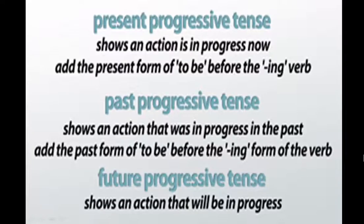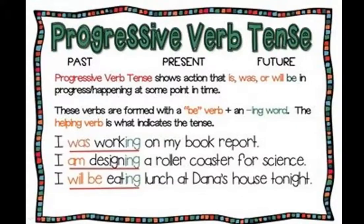Now the third one is the future progressive tense. In this tense, it shows an action that will be in progress. So here we will see examples of the progressive verb tense — the three parts: past, present, and future.